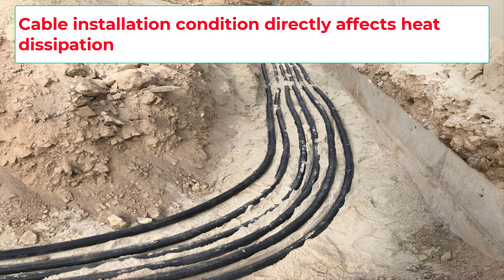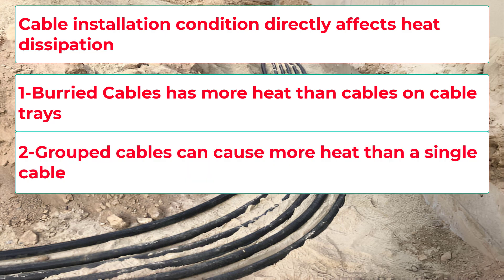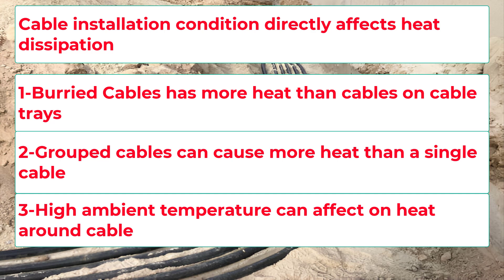Cable installation conditions directly affect heat dissipation. For example, a cable buried underground has less air circulation, so it retains more heat. Multiple cables grouped tightly together cannot release heat properly. High ambient temperatures — like running cables near machinery — mean cables run hotter. Because cables rely on their environment to cool down, each of these factors can reduce how much current they can carry safely.